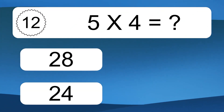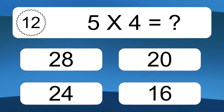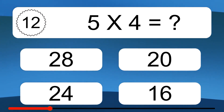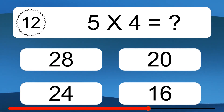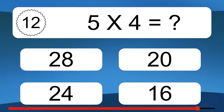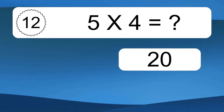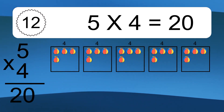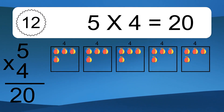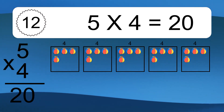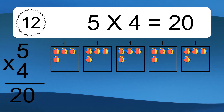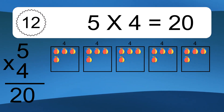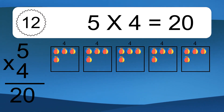5 times 4 equals what? We have 5 boxes, and each box has 4 colorful balls inside. 5 times 4 equals 20.